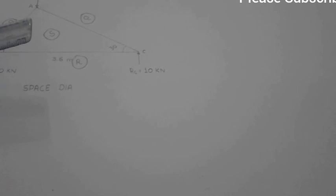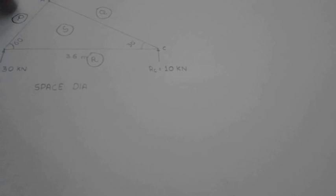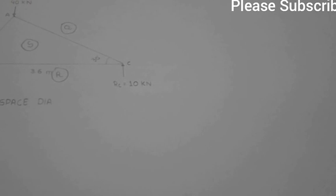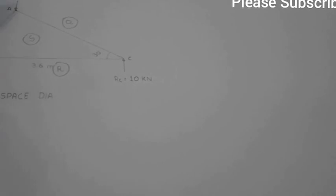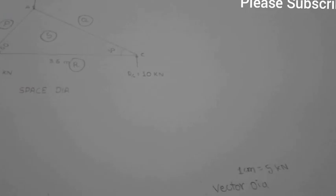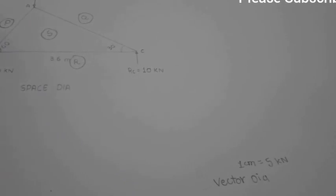Now take a suitable point P near the space diagram. From P to Q, PQ equals 40 kilonewtons, which is a downward force. When we have taken the scale 1 centimeter equals 5 kilonewtons, so 40 divided by 5 equals 8. So we have to draw 8 centimeters downward.